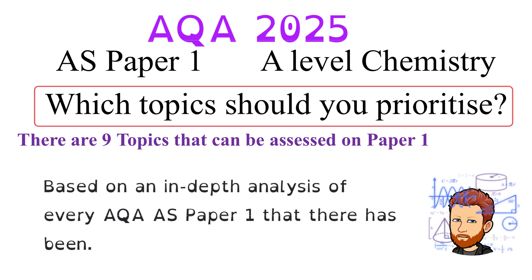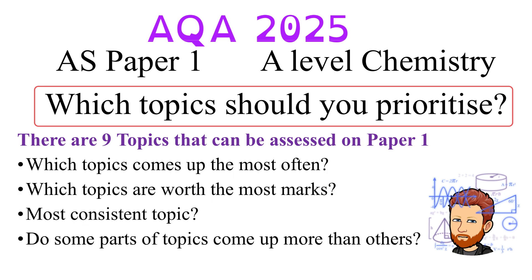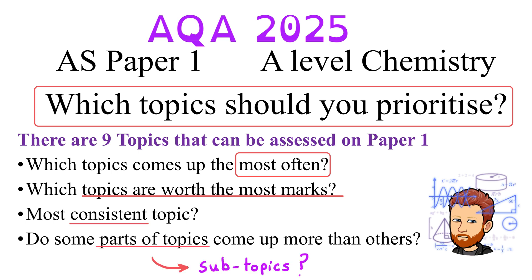Hello and welcome to this A-Level Chemistry video where I'm going to take a look at the AS Paper 1. Specifically, I'm going to be looking at which topics you should prioritize as the exam gets closer. This has been done based on an in-depth analysis of every AQA AS Paper 1 that there has been, and I'm hoping to help you answer the following questions: which topics come up the most often? Are there topics worth more marks than others? Is there a topic that comes up every single year? And are there any parts of topics worth more than others?